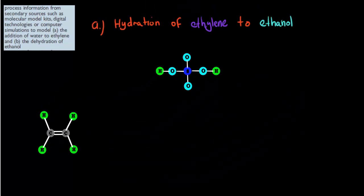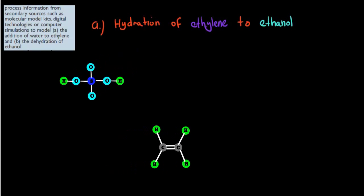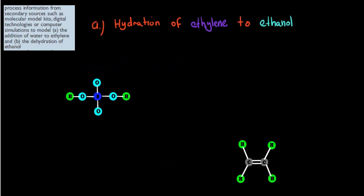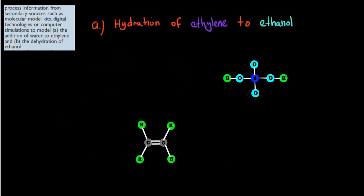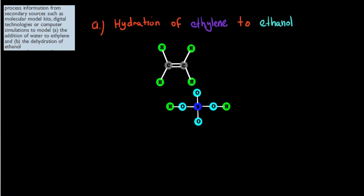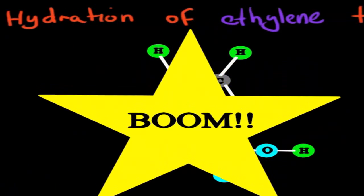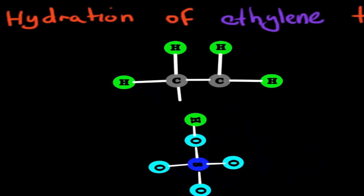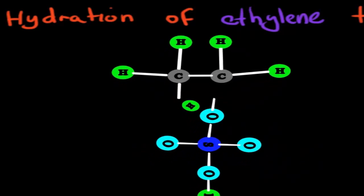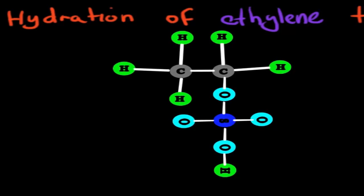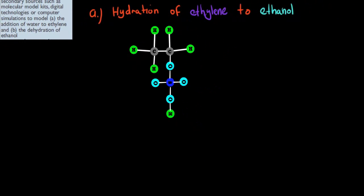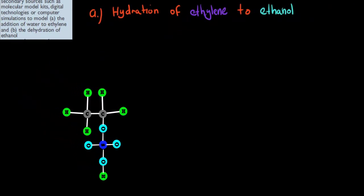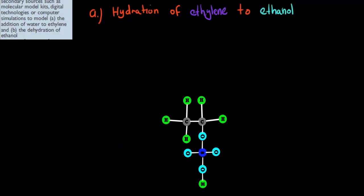Playing the animation again: ethylene and sulfuric acid move randomly until the temperature is increased — now they are moving faster and they collide. Hydrogen and oxygen come off sulfuric acid and attach to the ethylene, producing a new molecule called ethyl hydrogen sulfate. This intermediate product will be used for the second step.